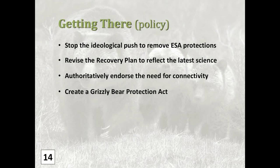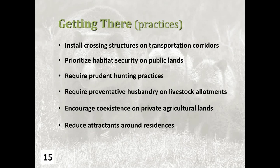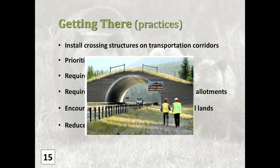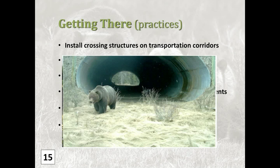Finally, on the policy front, we need some sort of special policy auspices like a Grizzly Bear Protection Act that, at the very least, provides the funding and resources needed to achieve connectivity — resources that are sustainable over the long haul. And on the ground, it's not rocket science. We know what we need to do: install crossing infrastructure on our major transportation corridors, notably Highway 2, Burlington Northern Santa Fe, and also more on Highway 93.